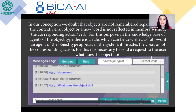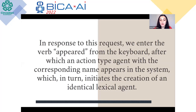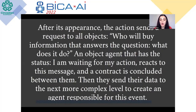To do this, it is necessary to send a request to the user: what does the object do? In response, the user enters a verb — for example, appeared, or any other verb needed — from the keyboard. An action-type agent with the corresponding name then appears in the system, which in turn initiates the creation of an identical lexical agent. After its appearance, the action agent sends a request to all objects: who will perform the action that answers the question — what does it do? An object agent with the status 'I am waiting for my action' reacts to this message and a contract is concluded between them. They then send their data to the next, more complex level, to create an agent responsible for this event.